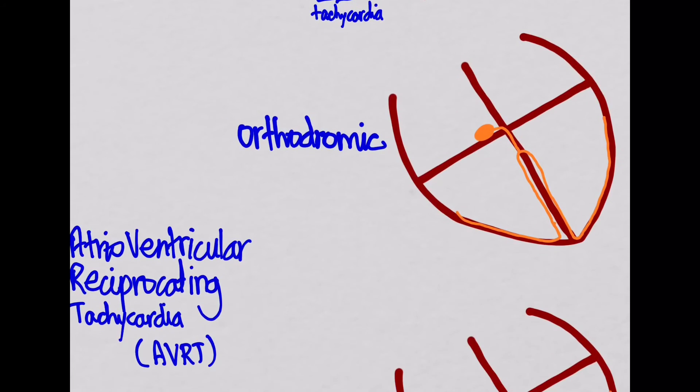Let's look at the atrioventricular reciprocating tachycardia. This name means that the tachycardia, the signal is reciprocating, going back and forth between the atrium and the ventricle. And of course, there's two ways, the orthodromic and the antidromic.